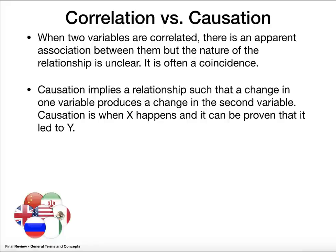Correlation versus causation. If you have two variables that are correlated, there looks to be an association between them, but the relationship is not clear — oftentimes this is just a coincidence. Whereas with causation, you can prove that one variable changed another. If X happens and it leads to Y and you can prove it had direct impact, that is causation.